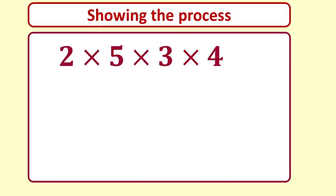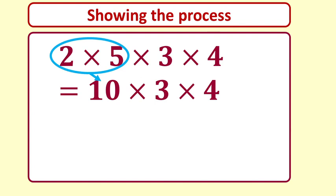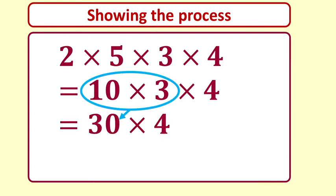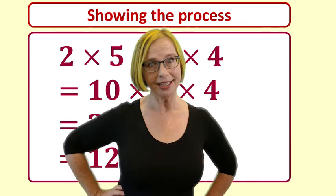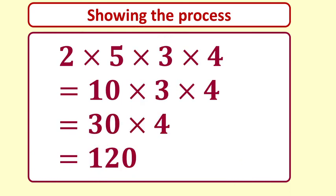To show our working we can write it like this. 2 times 5 times 3 times 4 equals 10 times 3 times 4 which equals 30 times 4 which equals 120. This is a good habit to get into for when the expression gets complicated. Each line shows one step in the process.